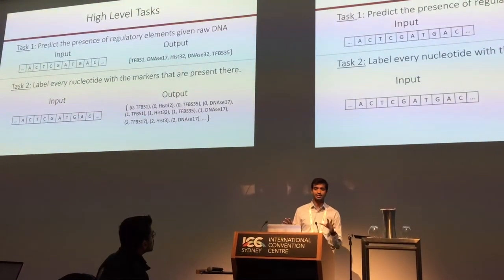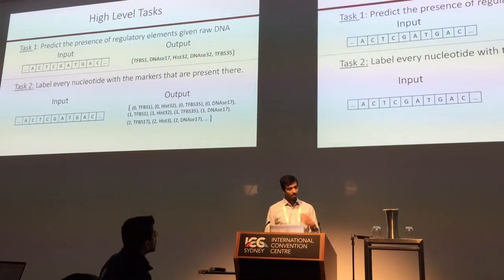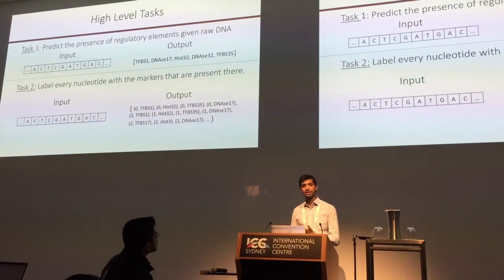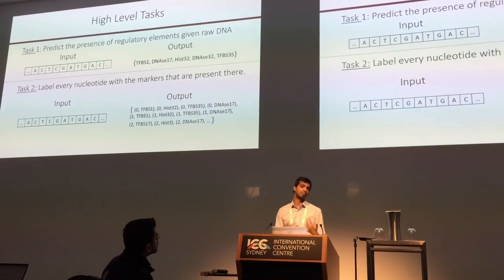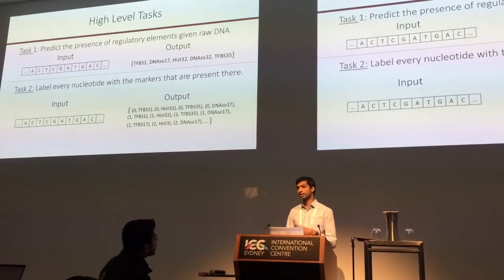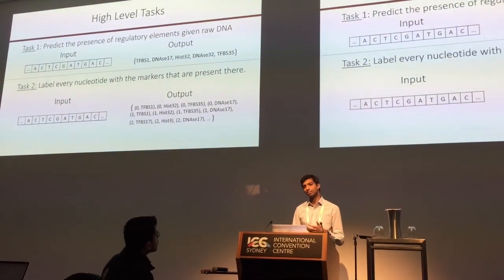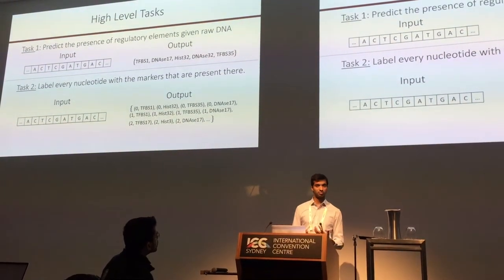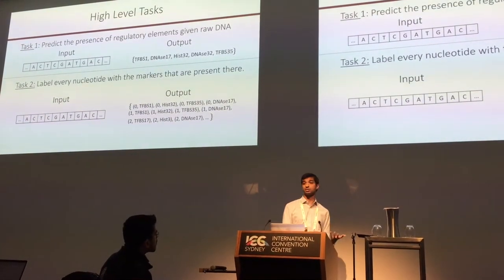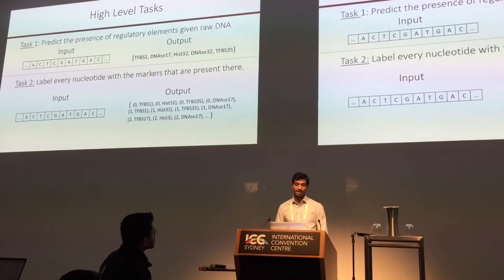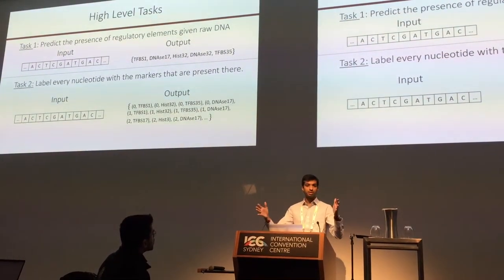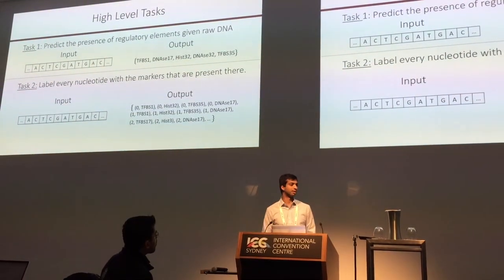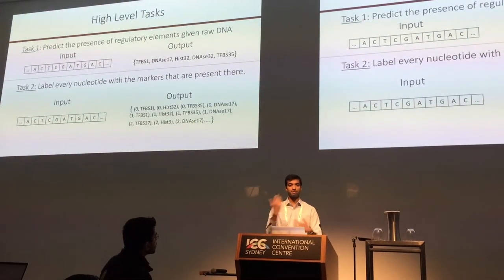There are two high-level tasks I'm going to discuss. The first is a prediction or validation task where we try to predict the presence of regulatory elements given raw DNA — given some sequence, predict what elements are in it. The second is more of a labeling task, similar to what we see in computer vision with labeling every pixel in an image, or in NLP with labeling every word in a sentence. In this case, given some input of fixed length, we predict at every location all of the regulatory markers that are present there.